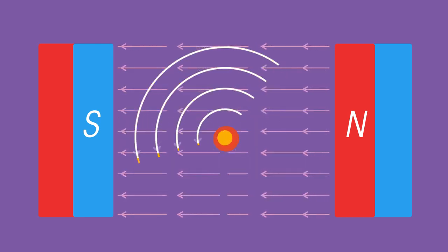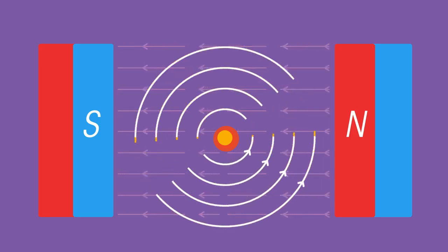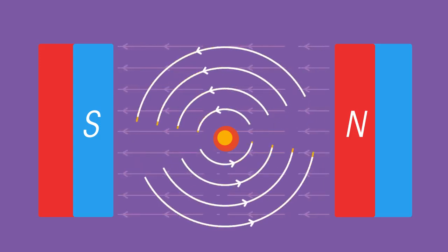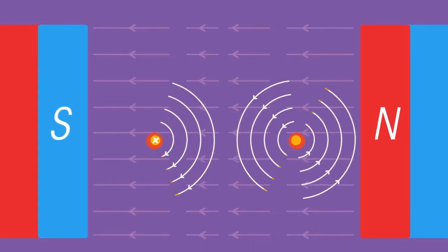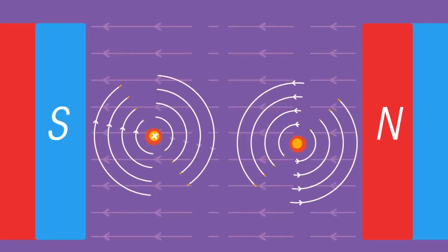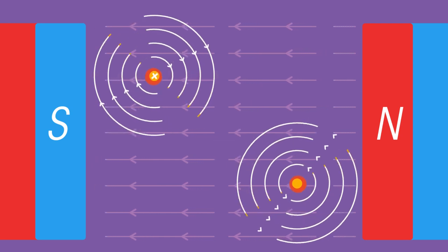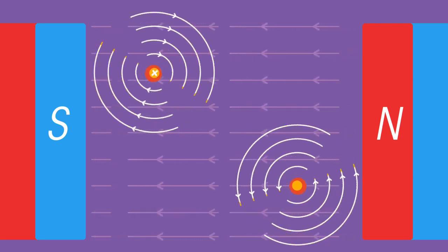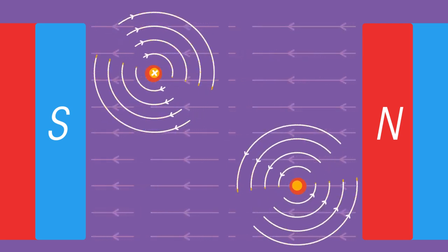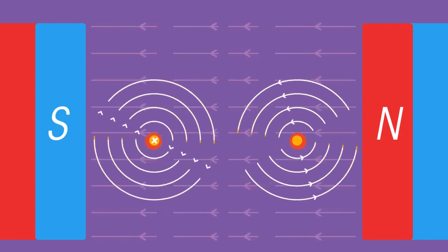Now reverse the current. This experiences a force in the opposite direction. Now place both wires in the same field. One wire will be pushed up, the other down, but we don't have circular motion yet.